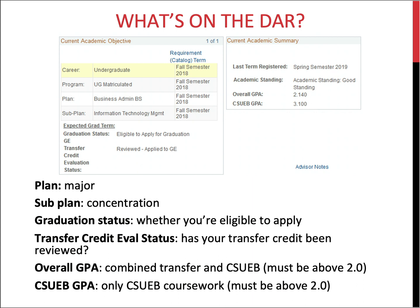Next is the transfer credit evaluation status. This line only appears for transfer students and lets you know whether or not your transfer credit review has been completed. If it hasn't been completed, there could still be courses not posted or ones not pulling into the right areas.